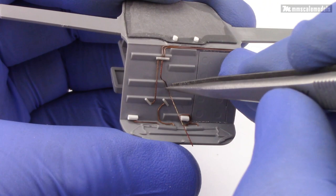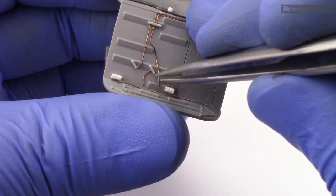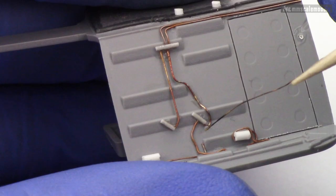For the smaller ones I used stretch sprue. And for the larger I used 2 mm round rod sections.